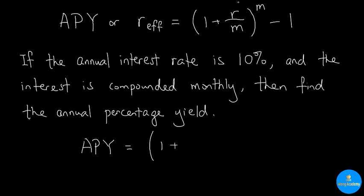1 plus little r is 0.1 in this problem, because 10% is converted to 0.1 in decimal form. As for m, it should be 12, because it is compounded monthly, so there are 12 compounding periods within a year. To the power 12, minus 1.